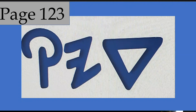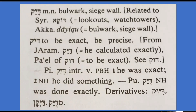On page 123, we have Dalit-Yod-Kuf, defined as bulwark, siege, wall, lookouts, watchtowers — and also to be exact, be precise. He calculated exactly. He was exact. He did something, was done exactly.